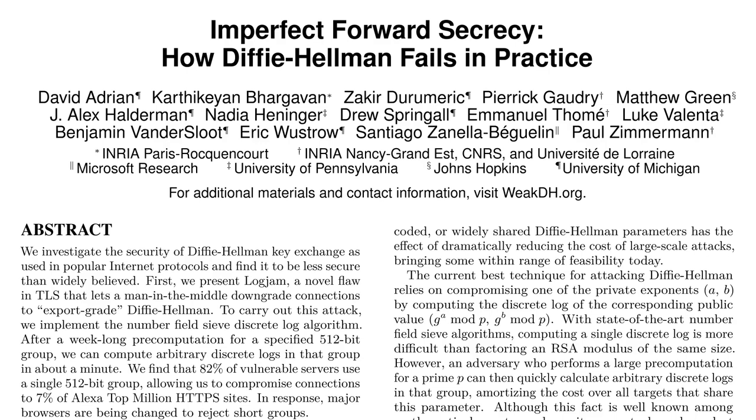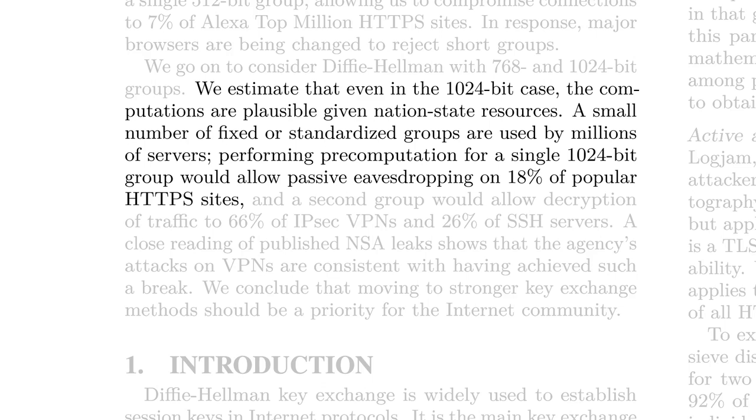Even though this is a nothing up my sleeve number, it's probably not great that lots and lots of people are using this specific prime number for this algorithm. Take a look at this paper. Let me read a little bit of this paper to you. We estimate that even in the 1024-bit case, the computations are plausible given nation-state resources. A small number of fixed or standardized groups are used by millions of servers. Performing precomputation for a single 1024-bit group would allow passive eavesdropping on 18% of popular HTTPS sites. So even if we can't do the unmixing in general, even if there's no general efficient solution to the discrete log problem, it's possible for a nation-state, somebody with a lot of resources, to do a ton of precomputation for a specific prime p, and consequently massively speed up the discrete log problem for that particular prime. And that's potentially a threat to our ability to communicate secretly.